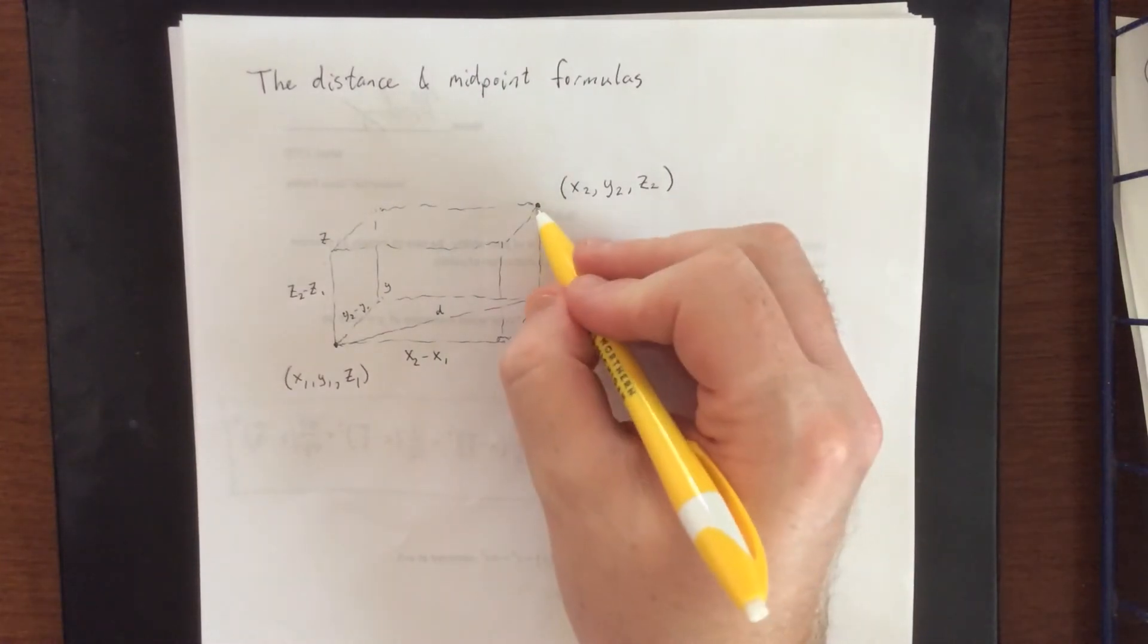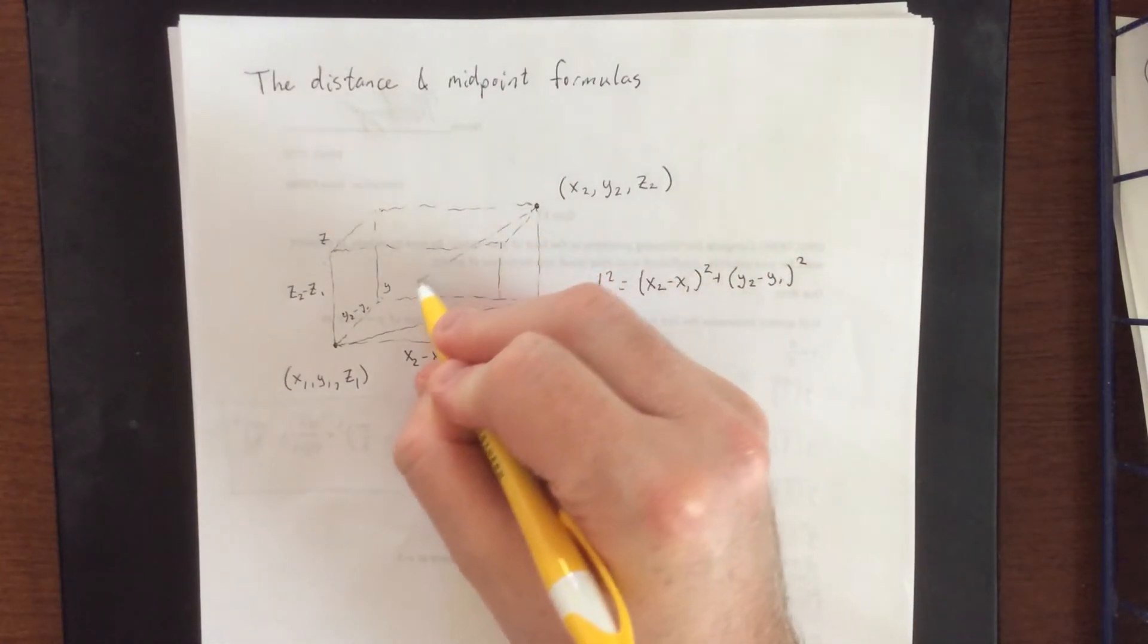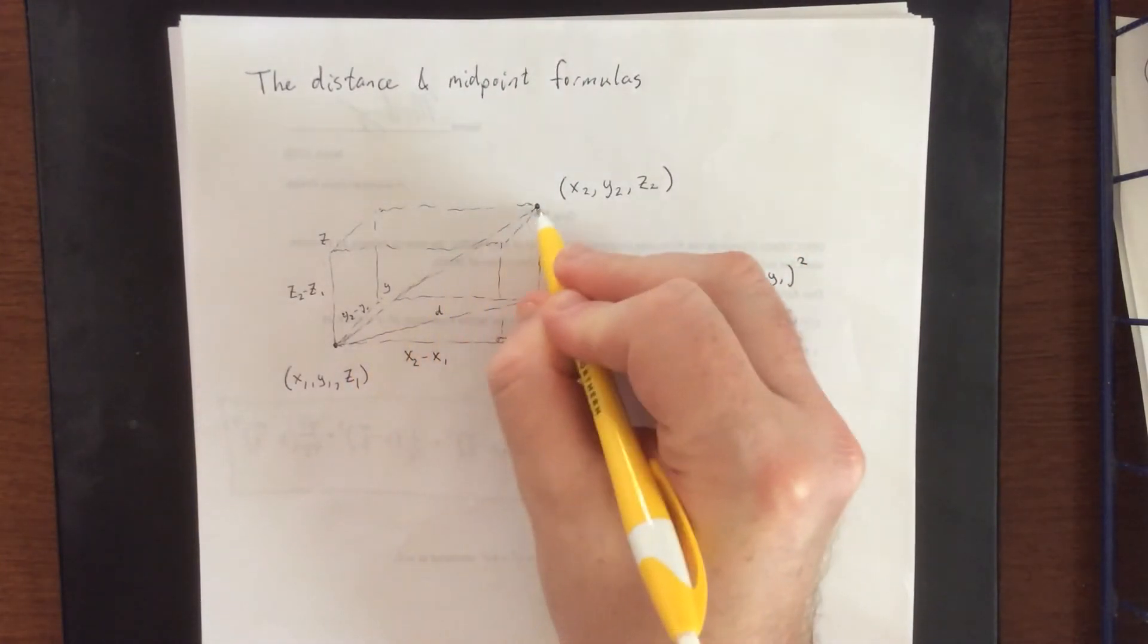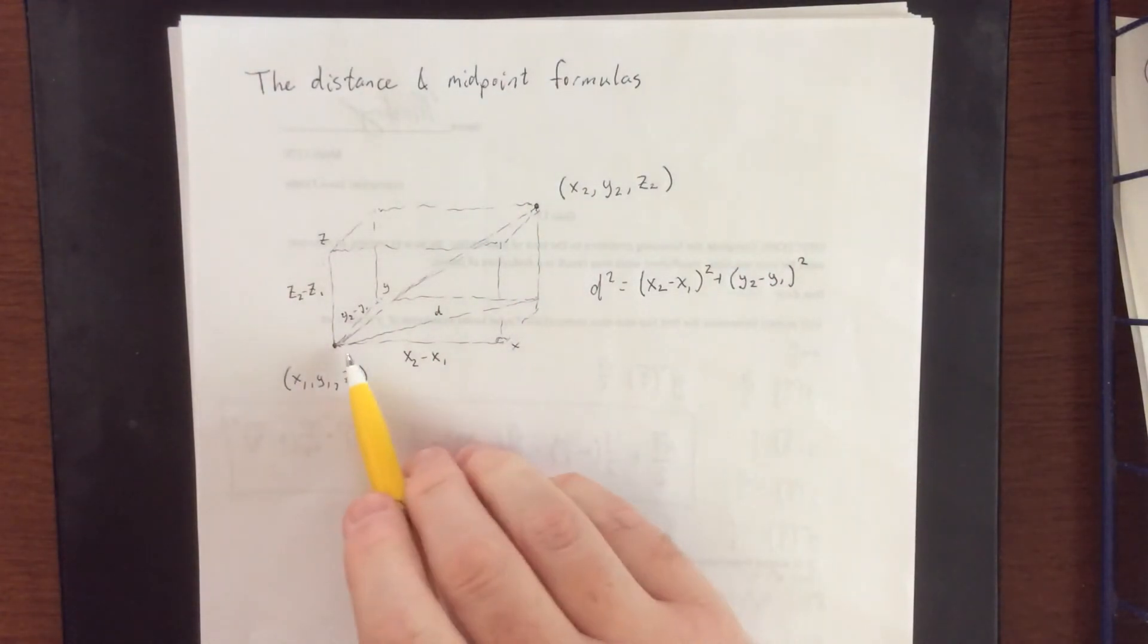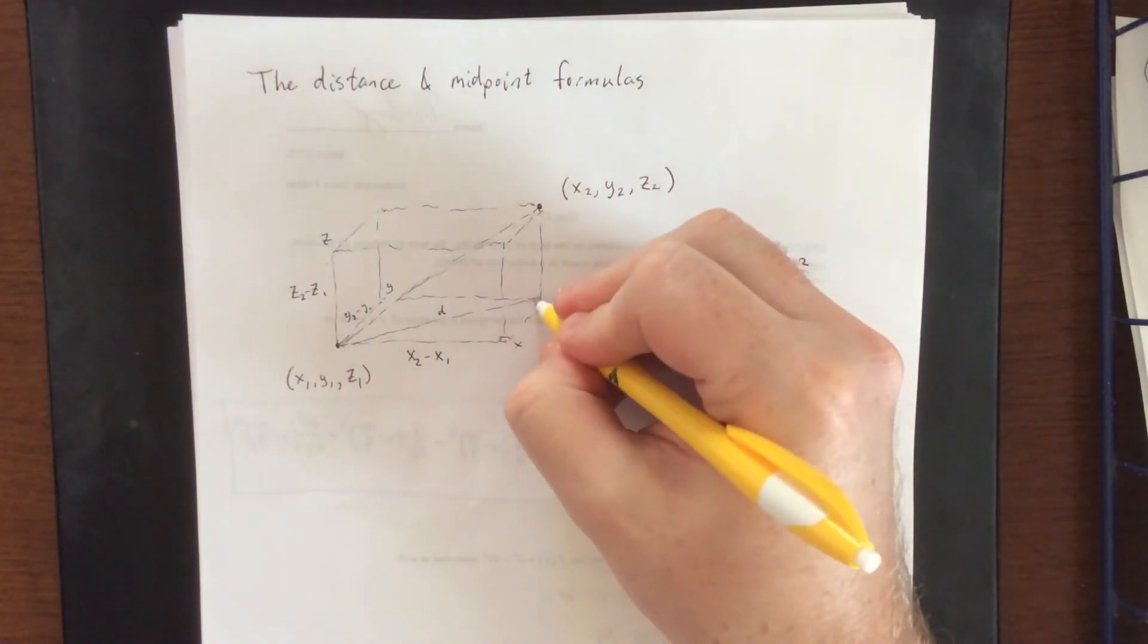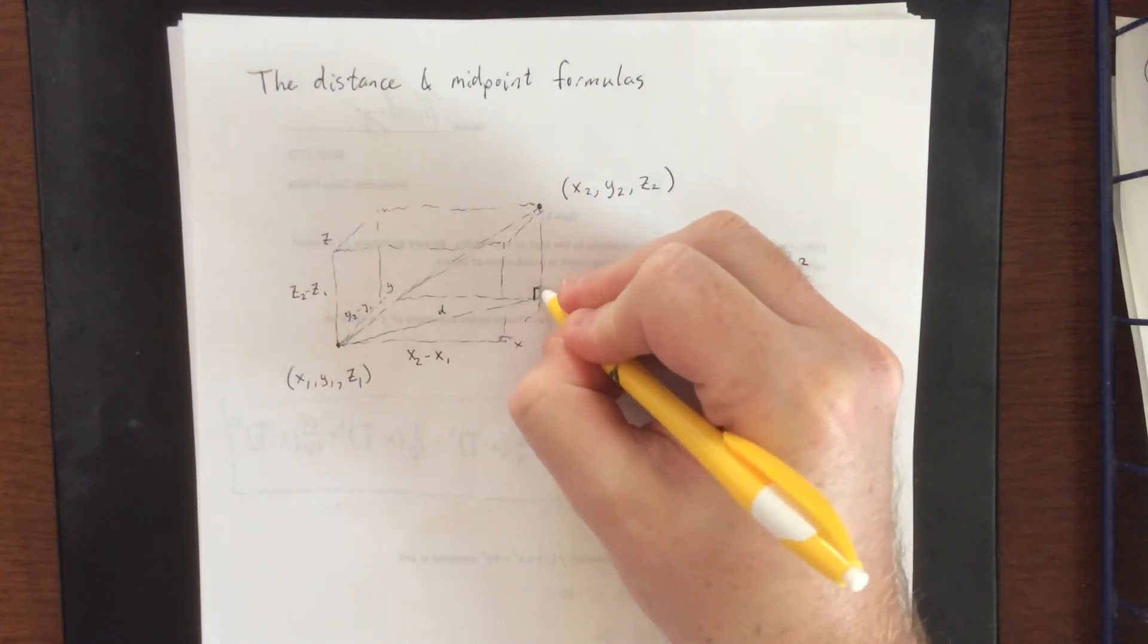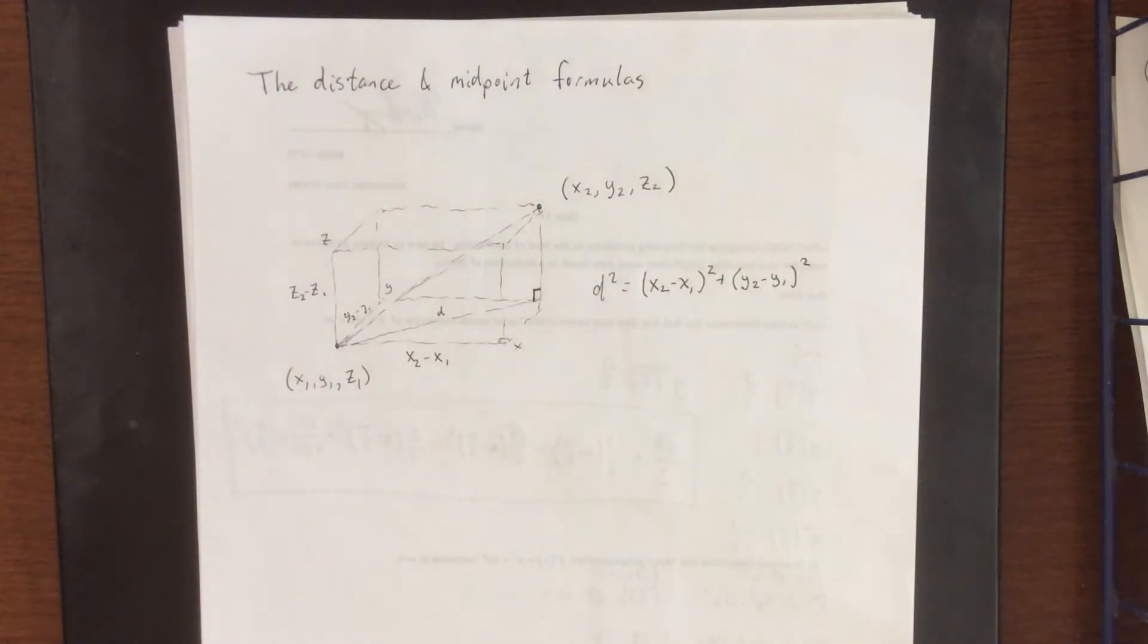However, the distance that we're actually looking for is this one right here that connects the initial point to the terminal point. You'll notice that d, along with this change in z, would technically create a right triangle as well.